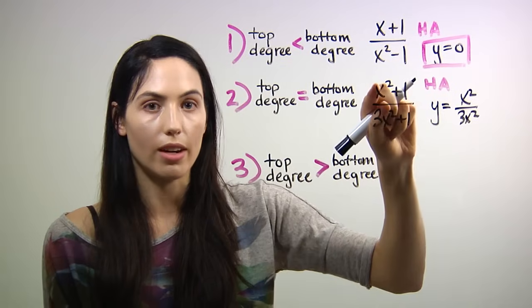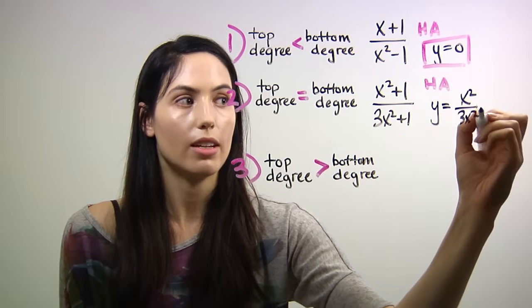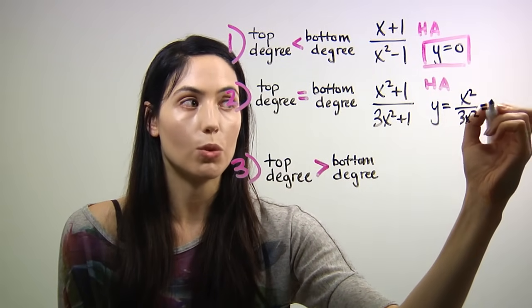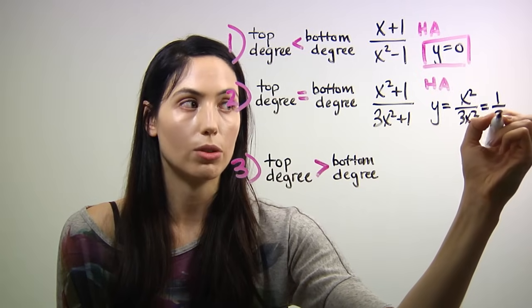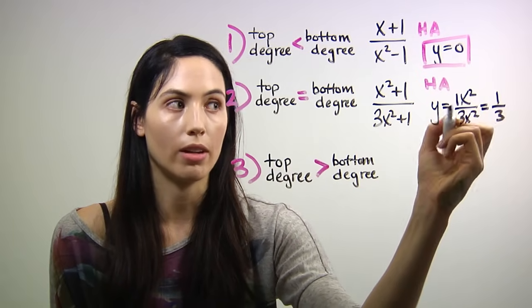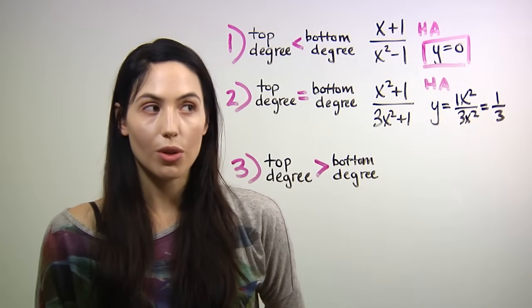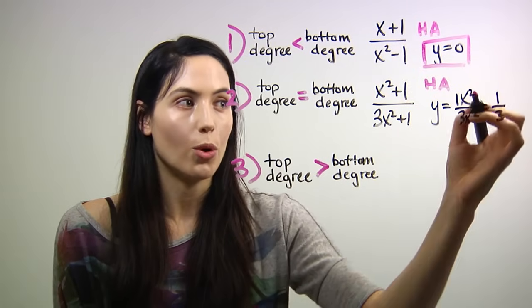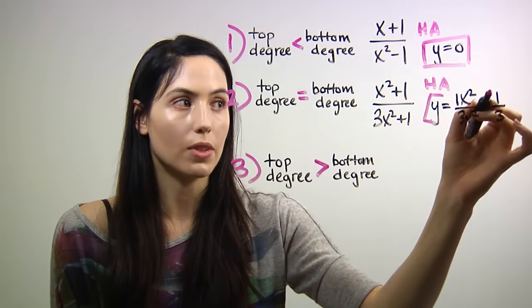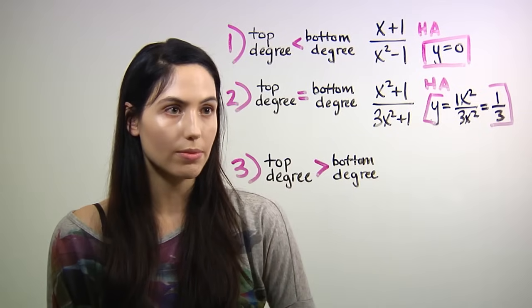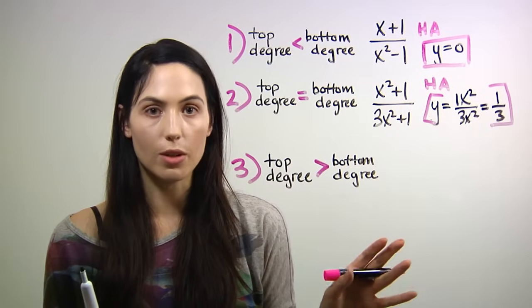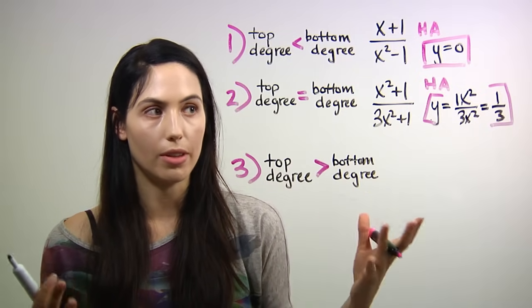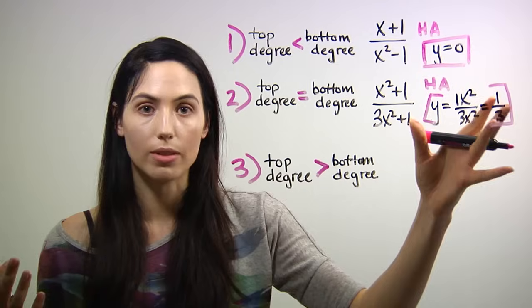So x squared divided by 3x squared, and simplify, and this leaves you with 1 over 3, since that was just a 1x squared. So your horizontal asymptote is y equals 1 third. So if the degrees are equal on top and bottom, you're going to end up with a horizontal asymptote that is y equals a number.